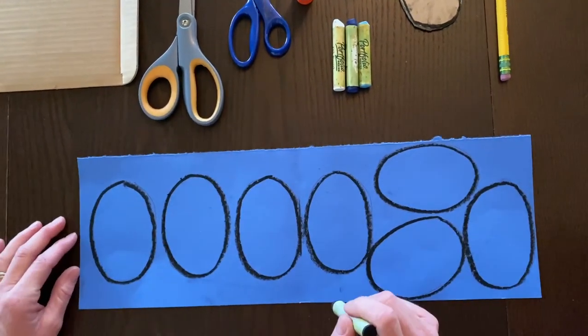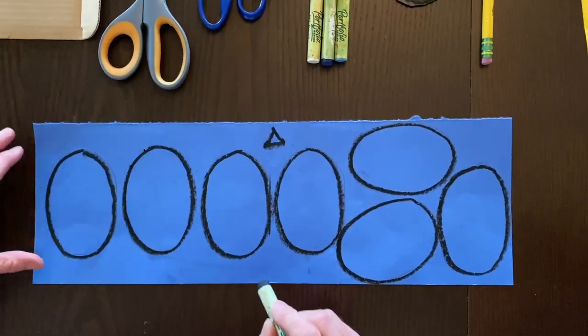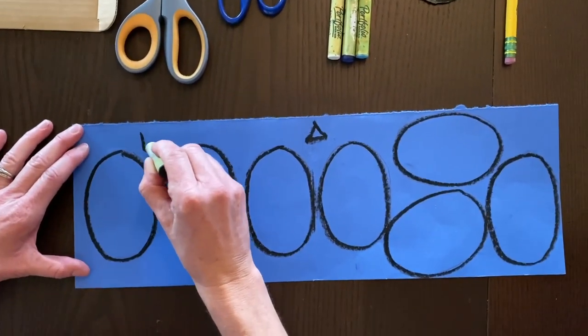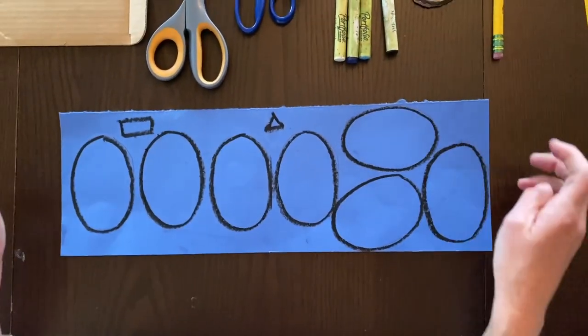Six, seven. Perfect. Now, here's what I also want you to do. I want you to fit in a small triangle in here and a rectangle in here. Those will come into play later. Fantastic.